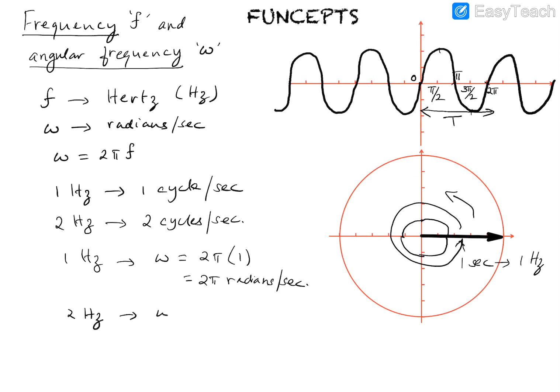Similarly, if the frequency is 2 Hertz, that corresponds to the angular frequency Omega being 2π times 2, which is 4π radians per second. This means the arrow would complete two full circles in one second, covering an angle of 2π for the first circle and another 2π for the second, totaling 4π radians in one second. Increasing the frequency simply corresponds to this arrow rotating faster in the anti-clockwise direction.